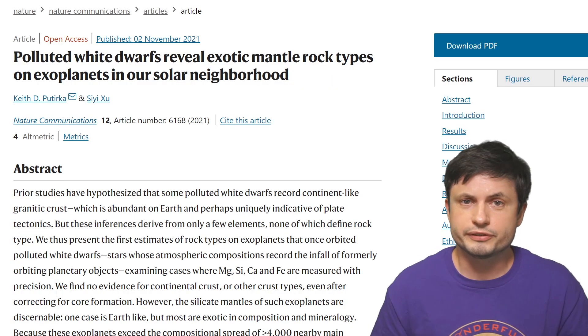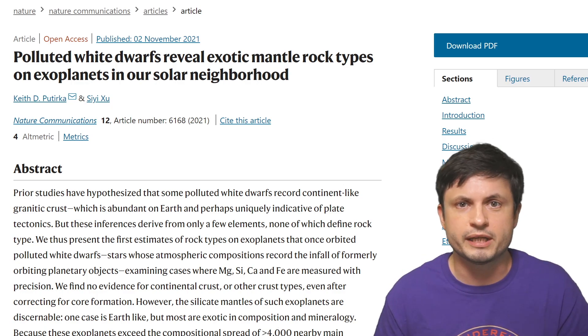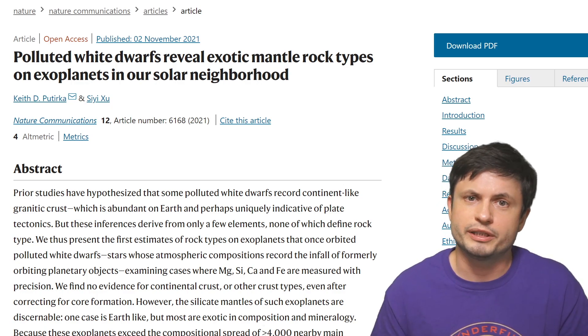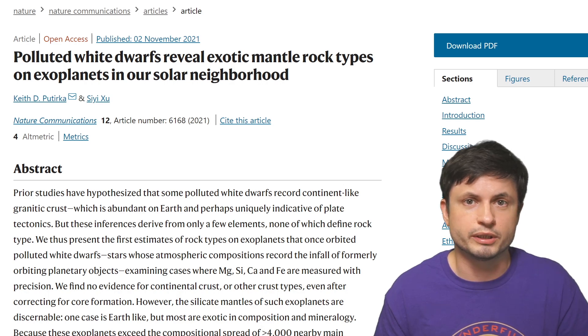The scientists behind this recent paper decided to take a look at 23 well-known polluted white dwarfs, or white dwarfs with a lot of different components in their atmosphere, with all of them located within about 650 light years away from the solar system.